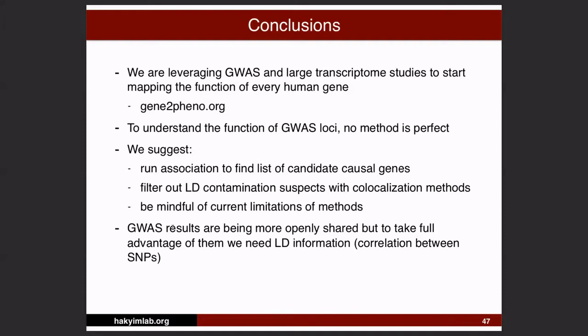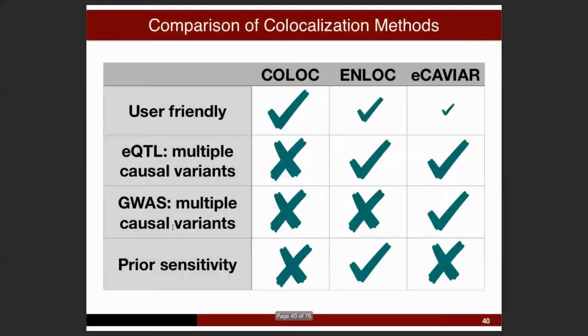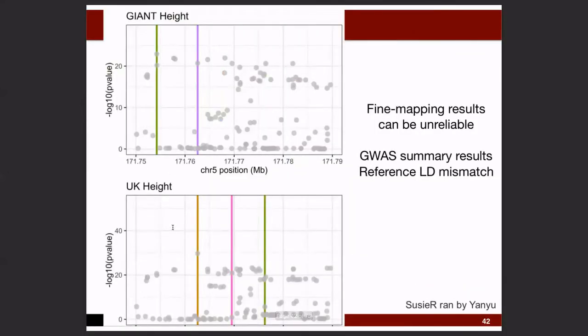We do have time for questions. They should do better — we haven't directly tested. We know that if the LD is wrong, we are going to get it wrong. Among all the variants with significant p-values, you have to decide which one is causal, and if you get LD wrong, you obviously won't identify the right causal variable. The developers tell me when I show them this that it's because we have the wrong LD, so we need to test.